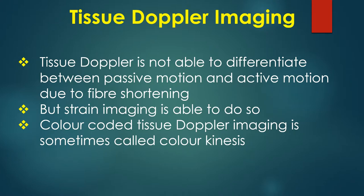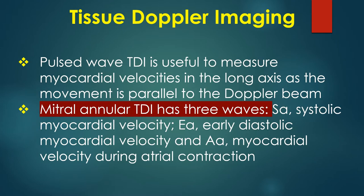Tissue Doppler is not able to differentiate between passive motion and active motion due to fibre shortening, but strain imaging is able to do so. Color-coded tissue Doppler imaging is sometimes called color kinesis. Pulsed wave TDI is useful to measure myocardial velocities in the long axis, as the movement is parallel to the Doppler beam.